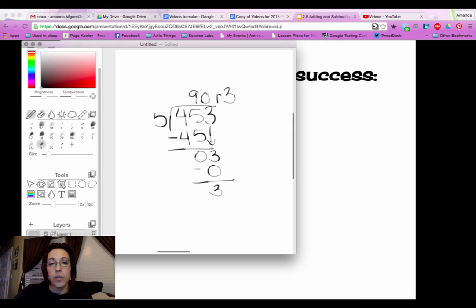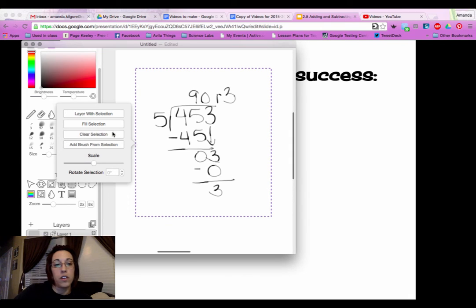This 0 is for any time that we don't have a number that our divisor will go into. So let's do just a couple more problems tonight.